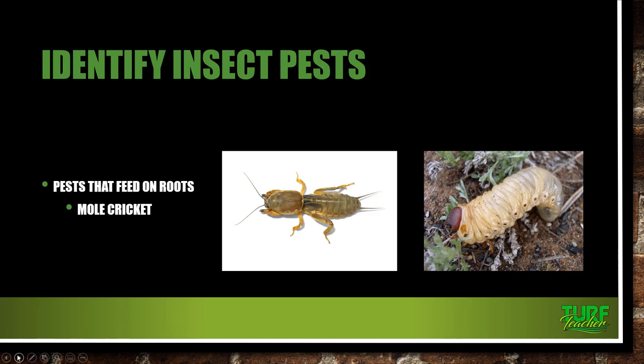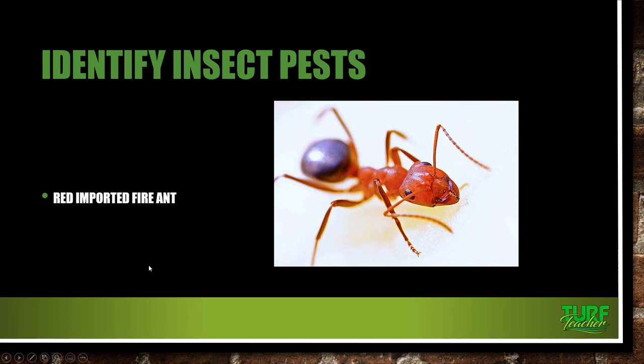The red imported fire ant — people are allergic to these things and can have a reaction to them. They build mounds in open areas or near stumps or other objects, and you can also find them underneath buildings. Six workers and the queen can actually start a new colony several hundred feet away from the original colony. The workers live about five weeks; the queen can live up to seven years. The males die soon after mating.